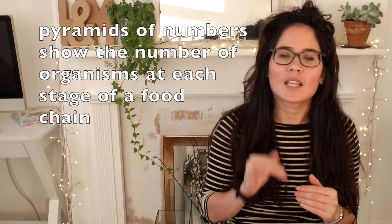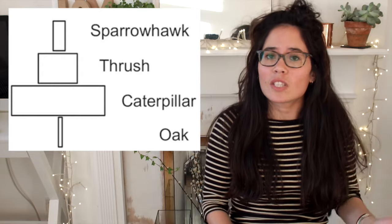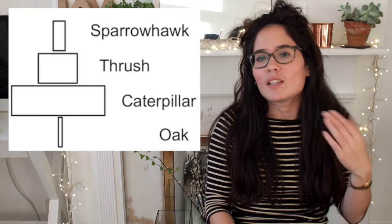Sometimes we arrange food chains as pyramids of numbers, which show the exact numbers of each organism at each trophic level. The bottom tends to be the plant — the number of oak trees, leaves, or grass blades — then the level above might be rabbits feeding on the grass, then foxes above that. However, we can't guarantee that the pyramid of numbers will be pyramidal in shape. For example, if you had one oak tree at the start, the base would be very narrow compared to the number of caterpillars feeding on it.